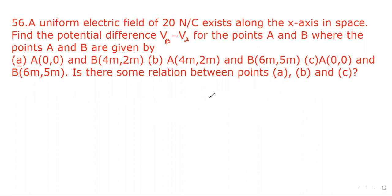The electric field is in this direction and suppose point A is here whose coordinates are 0,0 and then B is 4,2. So point B is here.